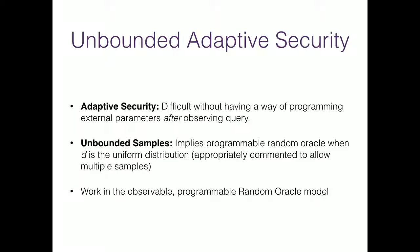Our main result shows how to combine a random oracle together with obfuscation to get universal samplers that are adaptively secure. One can also view this as a transformation from a random oracle that generates uniformly distributed samples to a sampling oracle that generates samples from any distribution you like in an adaptive and unbounded secure fashion.